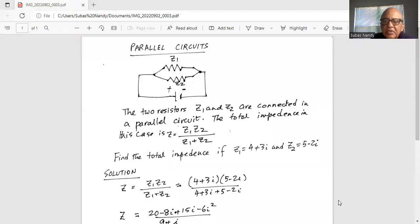Parallel circuits. The two resistors Z1 and Z2 are connected in a parallel circuit. The total impedance in this case is capital Z equal to Z1 times Z2 divided by Z1 plus Z2.